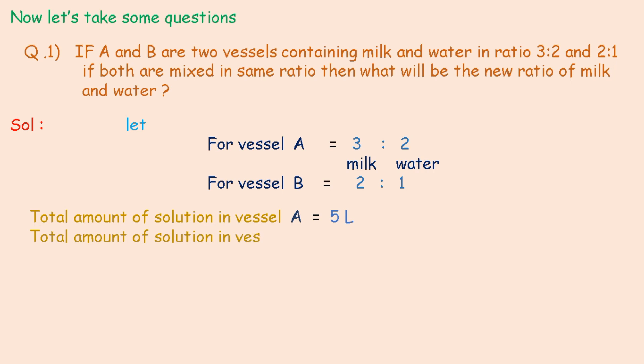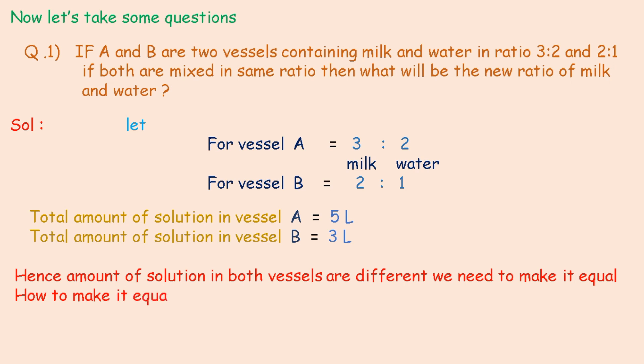Total amount of solution in vessel B is equal to 3 liters. Hence, amount of solution in both vessels are different. We need to make it equal. How to make it equal?